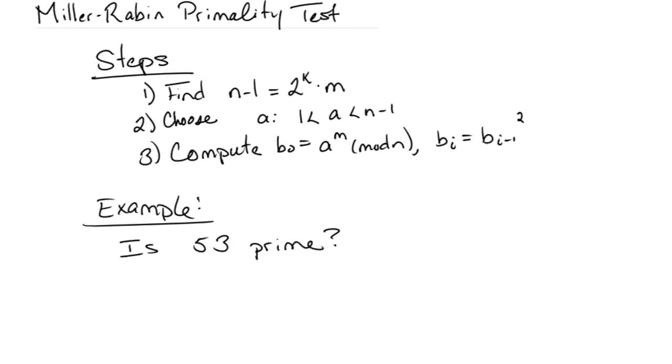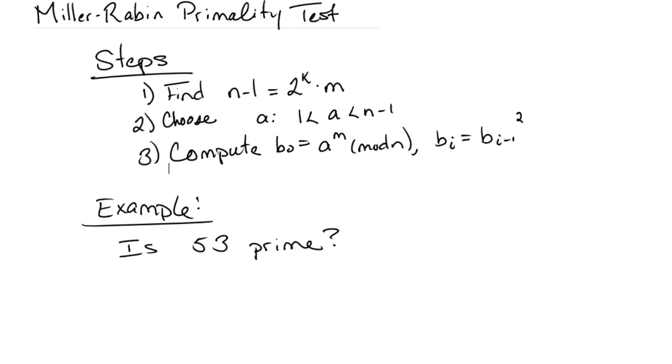Okay, so now there are three steps that I've broken this down into, and I'm going to explain how to do them as I work an example. So in our example, I want to know is 53 prime. So step one, I want to find n minus 1 equals 2 to the k times m.